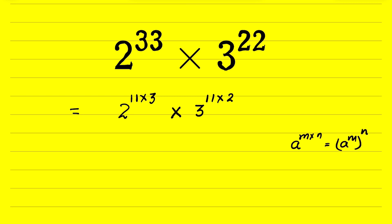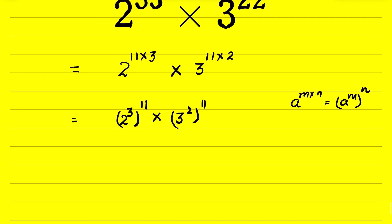Applying this identity, 2 raised to the power 11 times 3 becomes 2 raised to the power 3, whole raised to the power 11. And 3 raised to the power 11 times 2 becomes 3 raised to the power 2, whole raised to the power 11. This gives us 8 raised to the power 11 times 9 raised to the power 11.